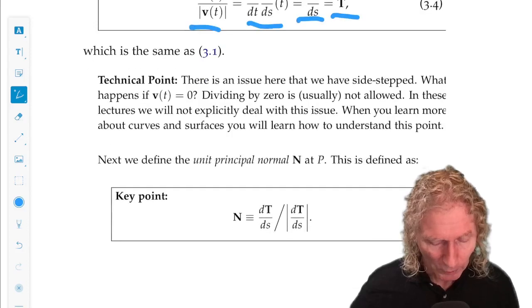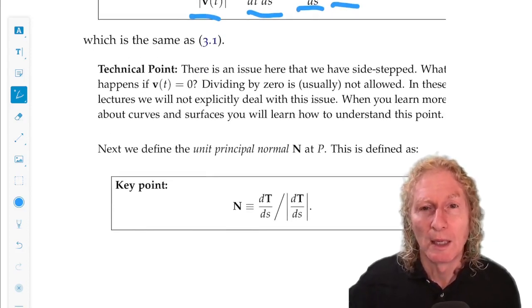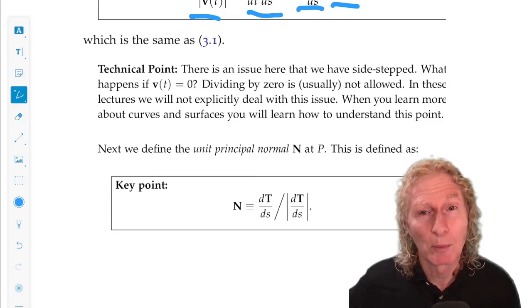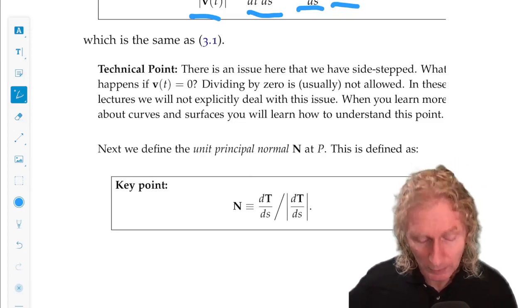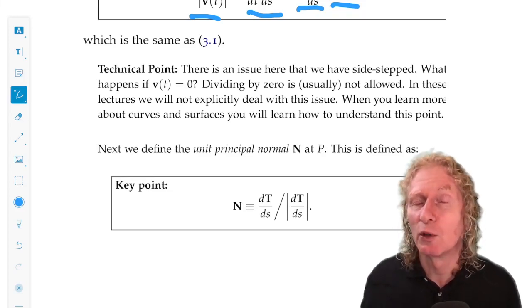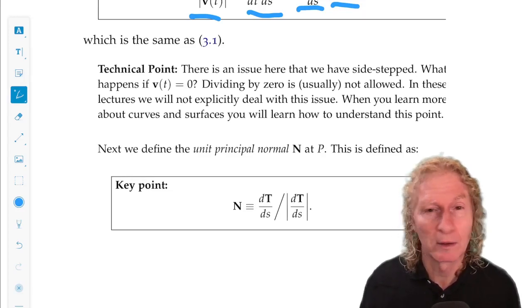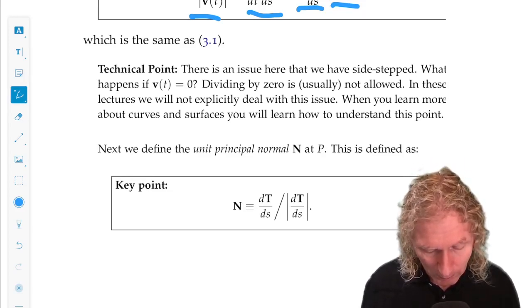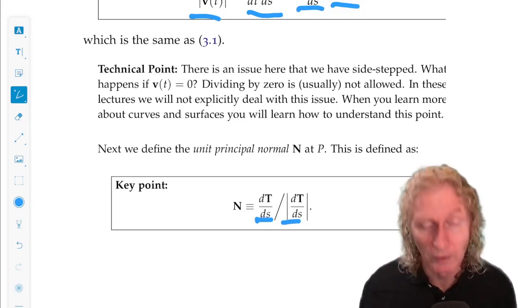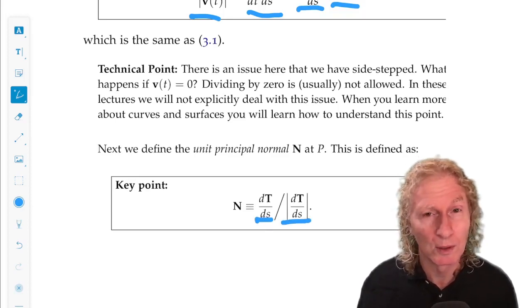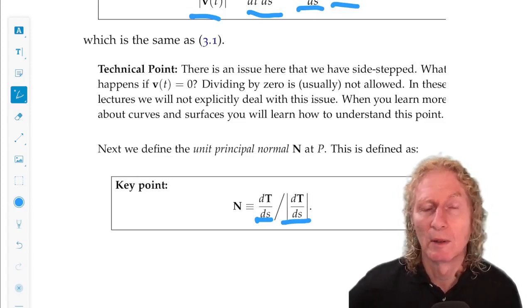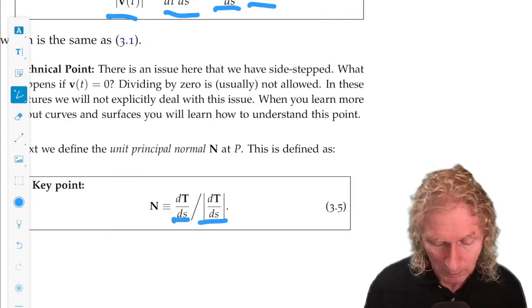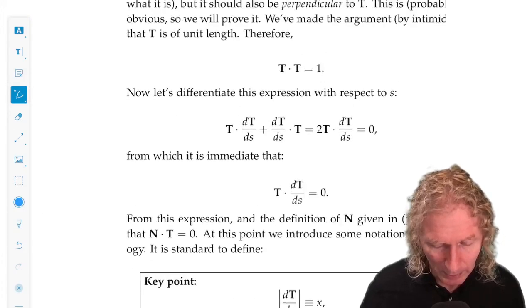Now we're going to define another vector, N. We're going to call that the principal normal at the same point P along the space curve. That's the derivative of the tangent vector that we just constructed divided by its magnitude. So clearly that vector is of unit length, but we need to show that it's perpendicular to T.